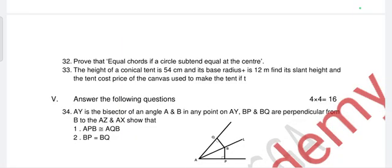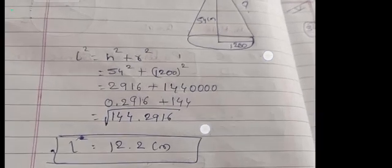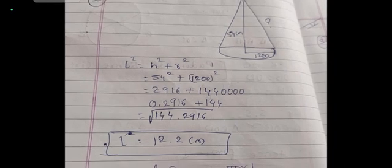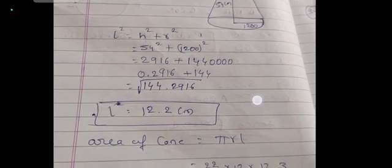Question 33: the height of a conical tent is 54 cm and the radius is 12 m. Find the slant height. Using l² = h² + r², with h = 54 cm and r = 1200 cm (converted from 12 m), substitute to get l ≈ 1201.2 cm. Then find the area of the cone by multiplying by the given cost per unit.